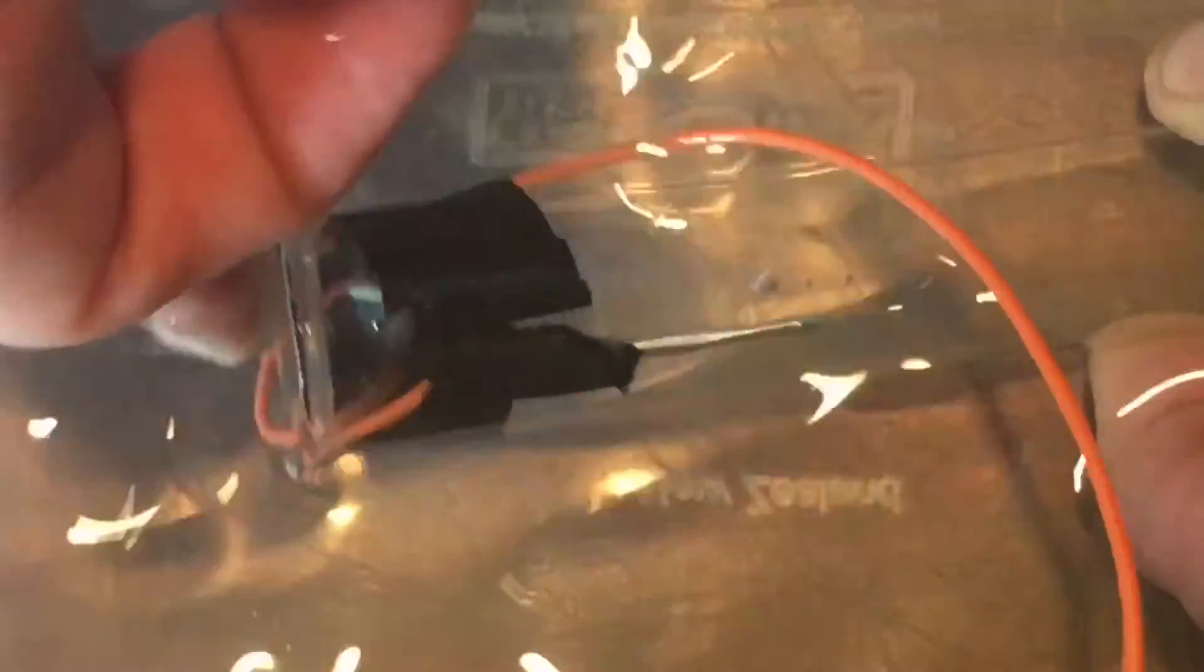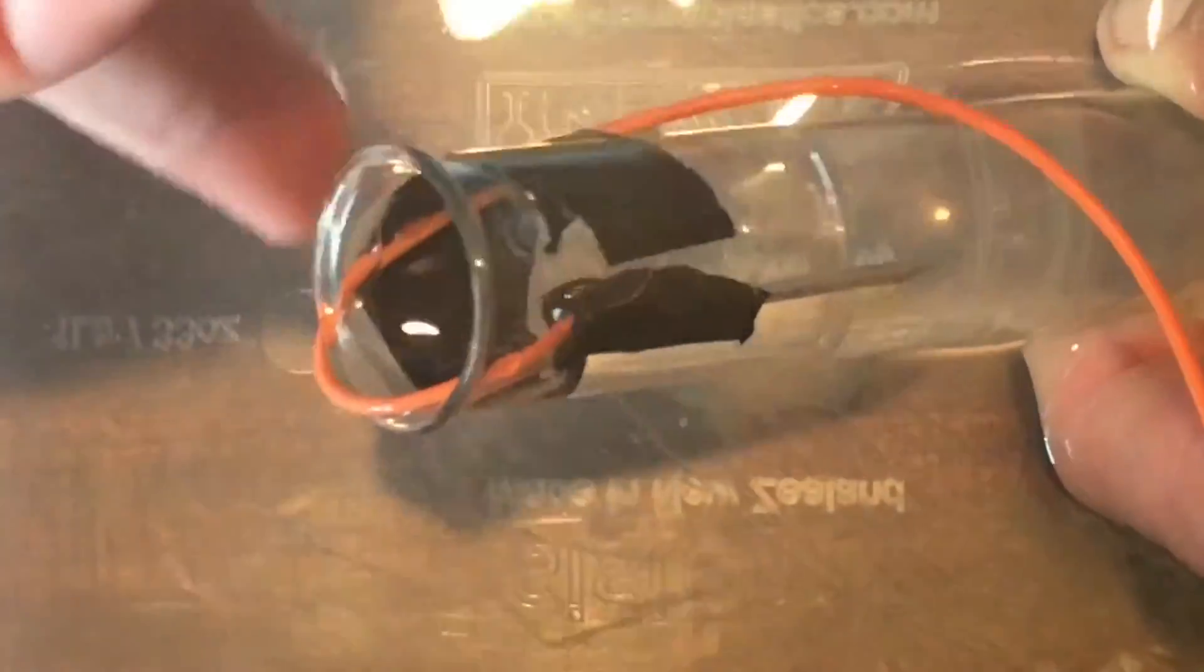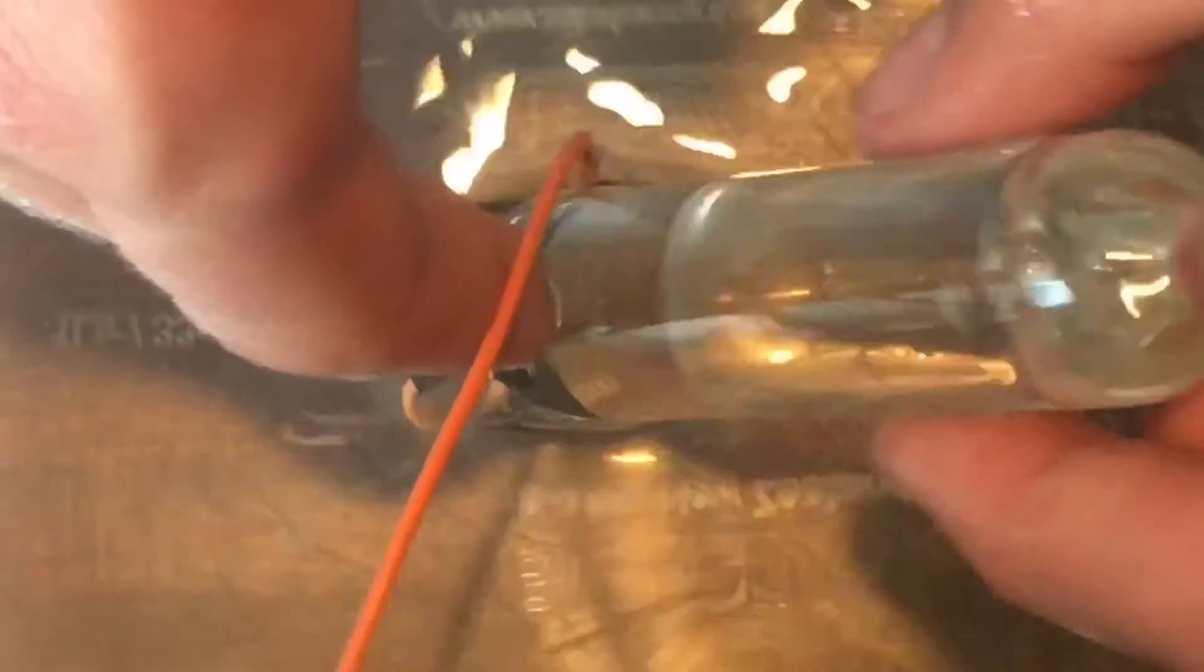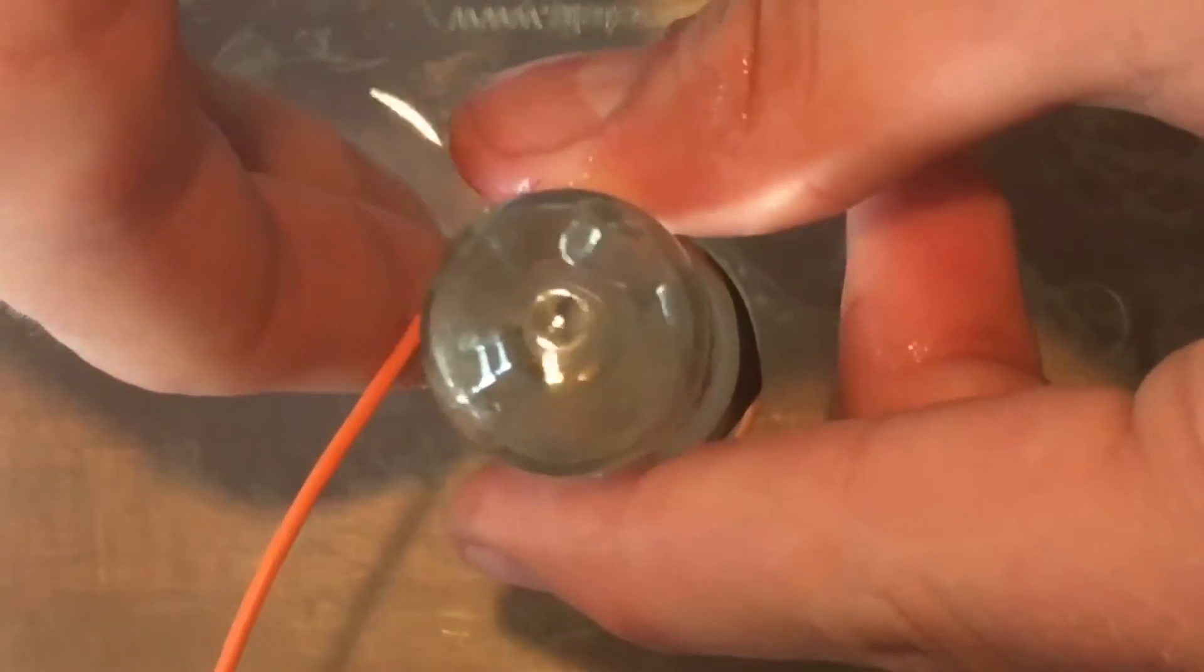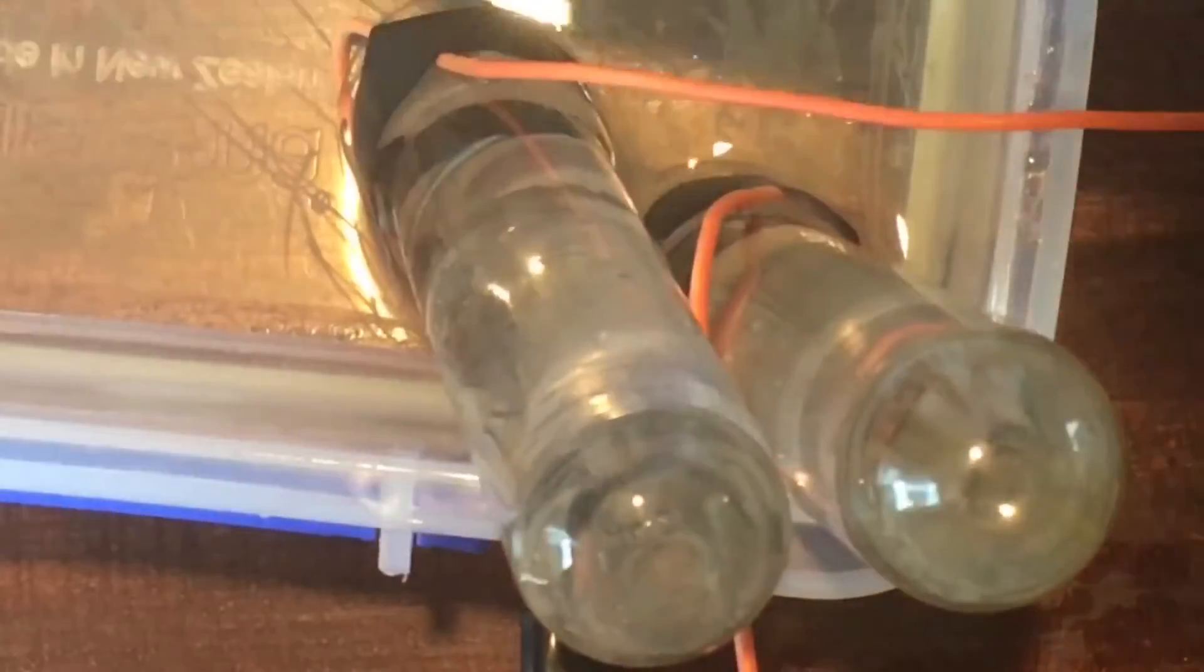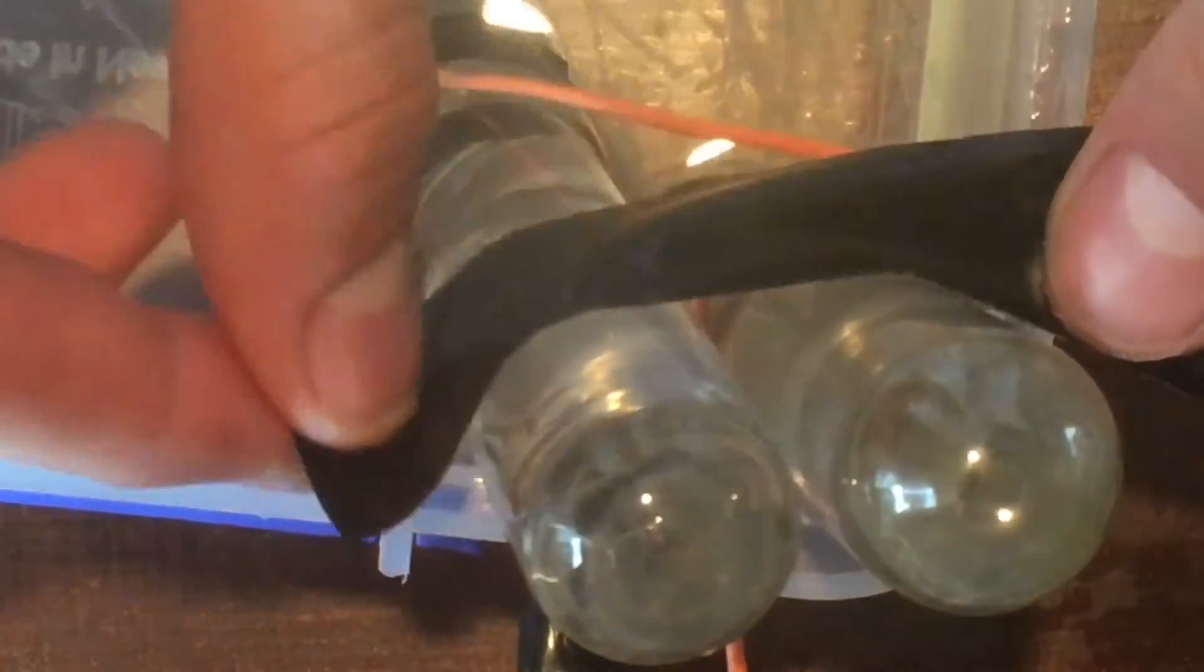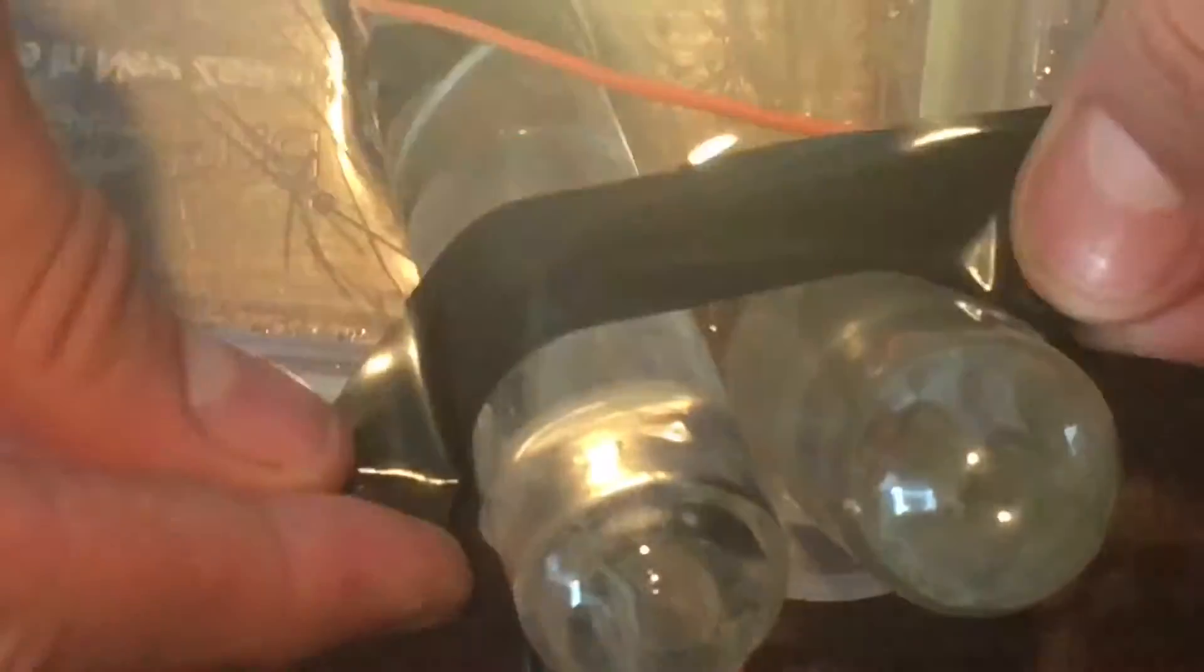Then submerge the test tubes into the water like this. Tip them up and then invert them to get rid of any air bubbles and create a perfect vacuum. Then put them at a slight angle in one of the corners and secure them with duct tape.